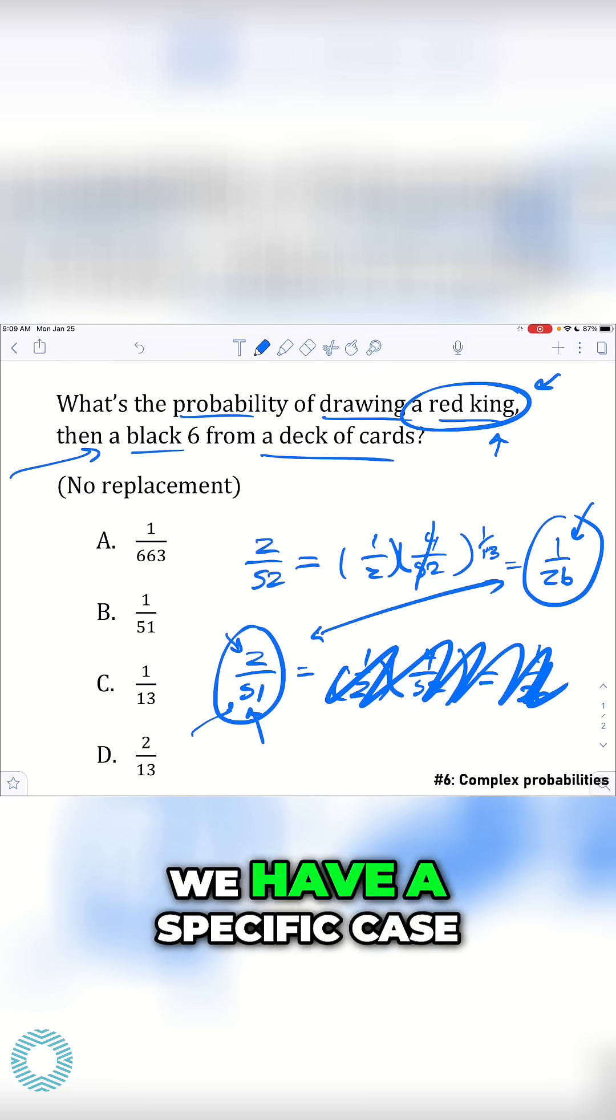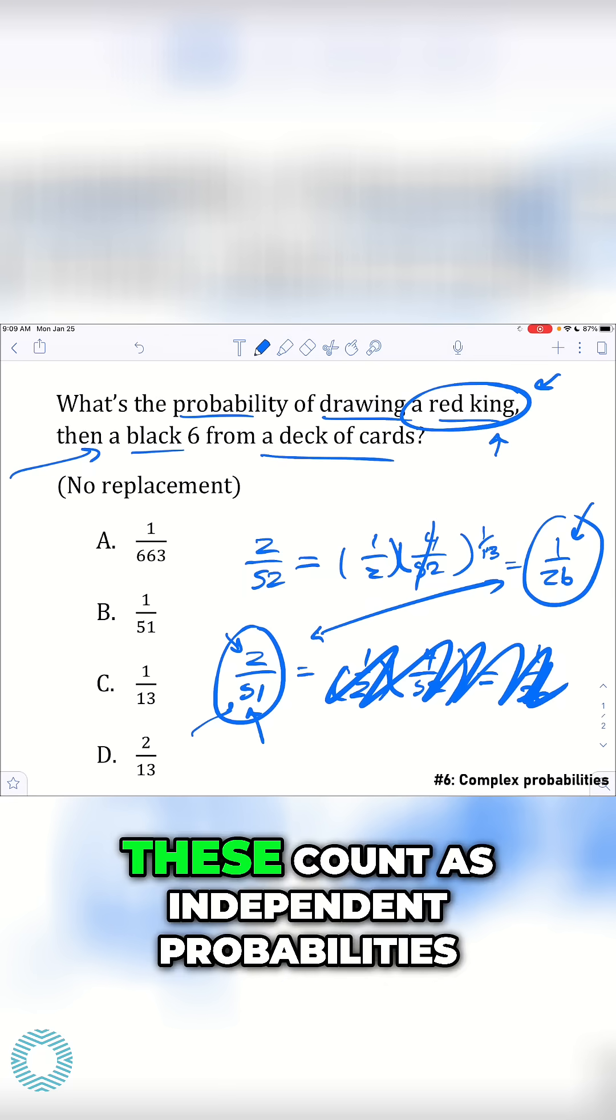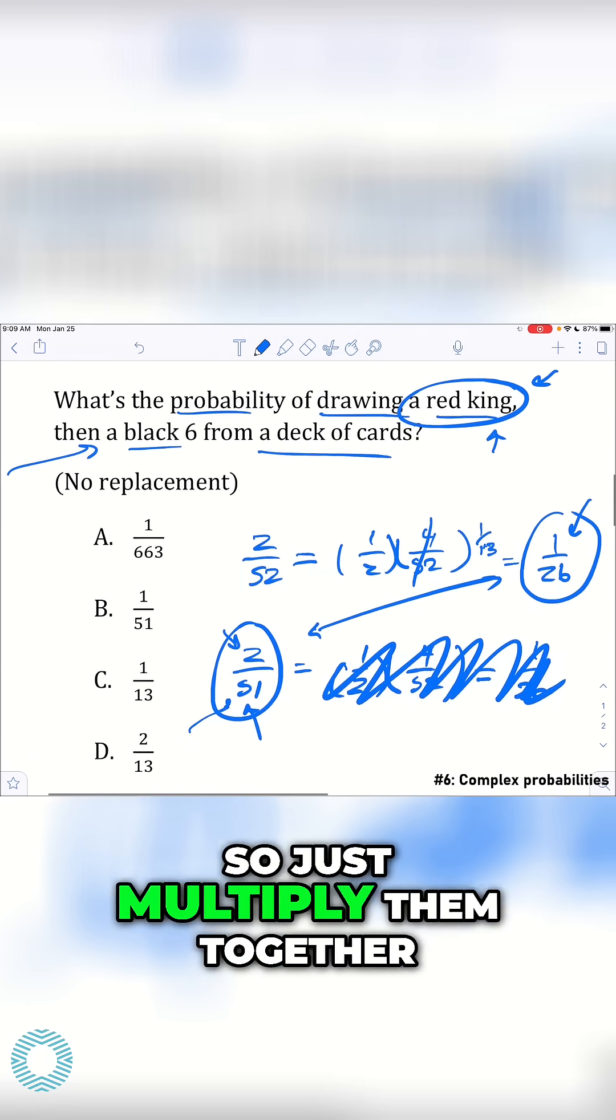So again, we have a specific case. We're just looking for the probability of that. Just know for a deck of card problems, these count as independent probabilities. So just multiply them together.